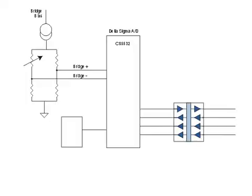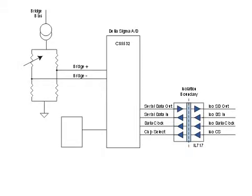Here's a single channel isolated Delta Sigma ADC converter using an IL-717. The ADC is located on the bridge, with no signal conditioning between the bridge sensor and the ADC. The IL-717 isolates the SPI control bus from the microcontroller, and the system clock is on the isolated side of the system.